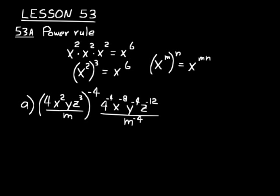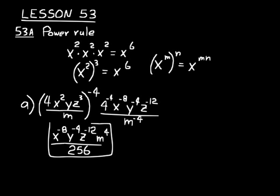We want to write our answer with all the variables in the numerator, so let's rearrange. We can move that 4 to the negative 4 down to the denominator, making it 4 to the positive 4, or 256. So we have a denominator of 256. In the numerator we'll have x to the negative 8, y to the negative 4, z to the negative 12, and m to the positive 4 — since m had to move up. So the first step is to use the power rule, then arrange the variables as instructed.